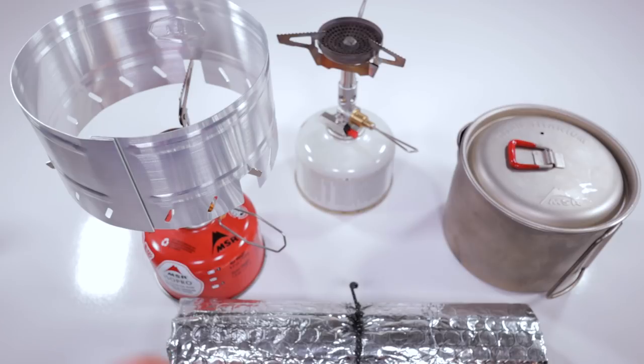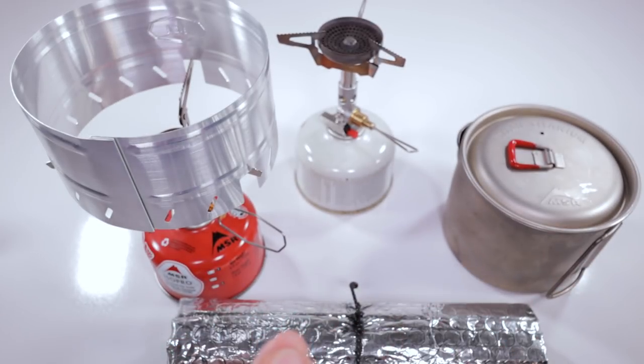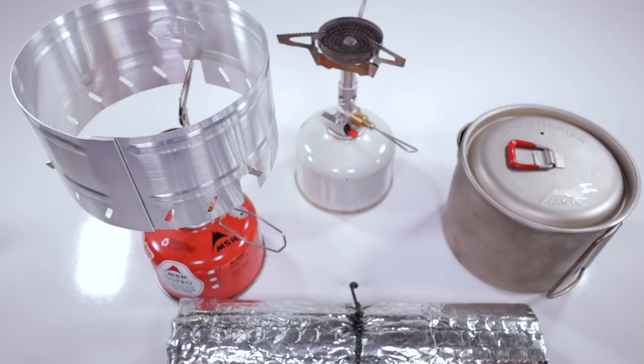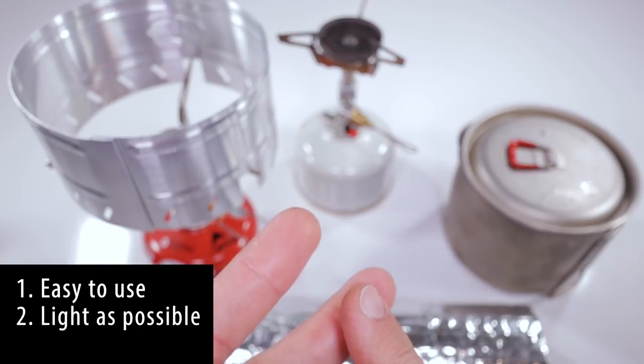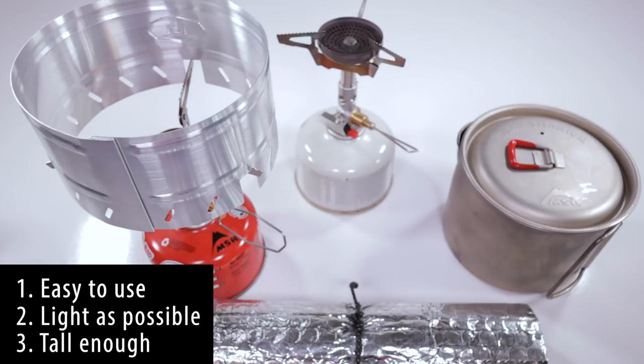Through the natural progression of my hiking and backpacking, I've used a bunch of different types of windscreens - aluminum foil, thicker gauge aluminum foil, rocks, reflectix, sit pads, my backpack. No matter what option I've used, it needs to meet a certain level of criteria for me to actually use it: number one, it has to be easy to use; number two, it has to be as light as possible; and number three, it has to be tall enough.